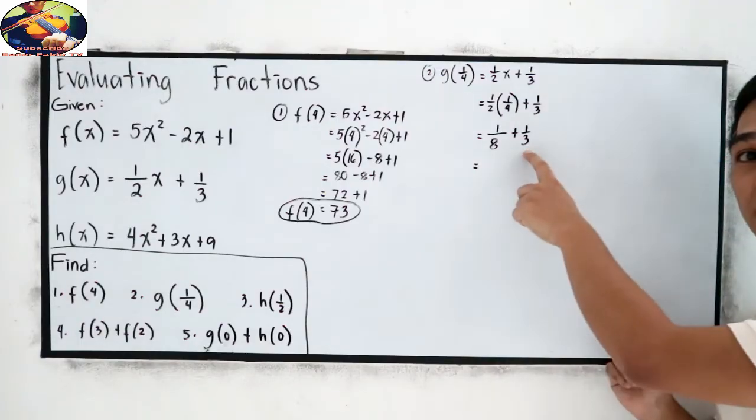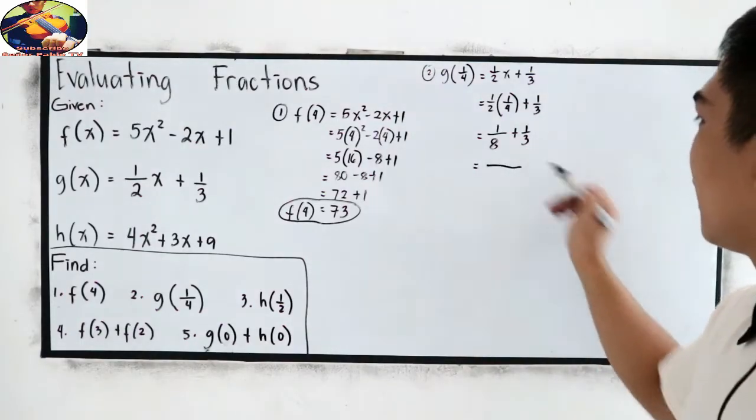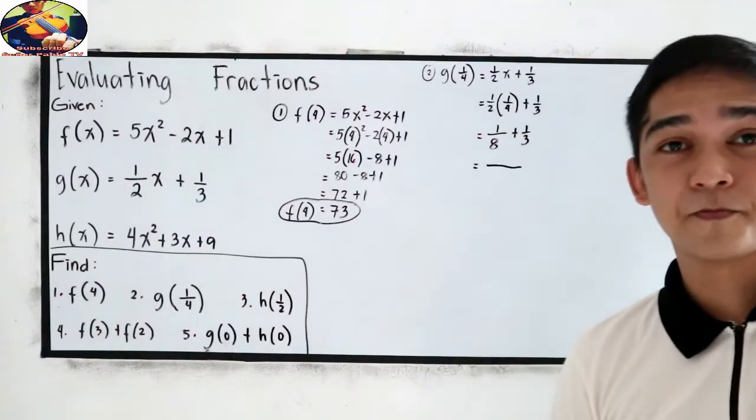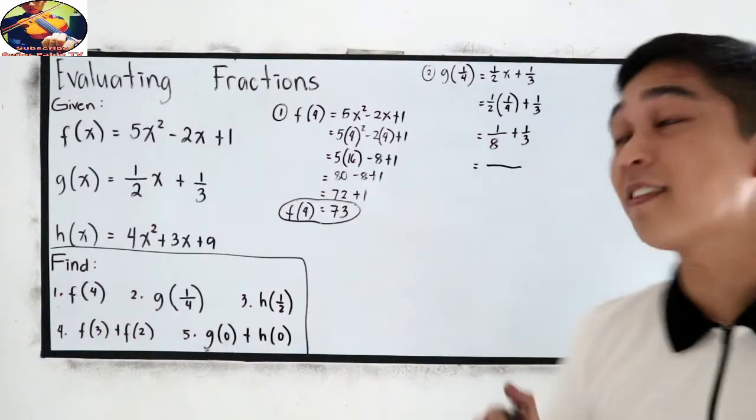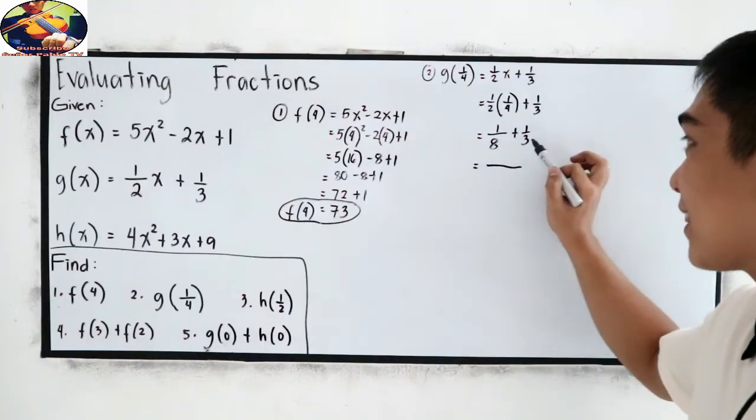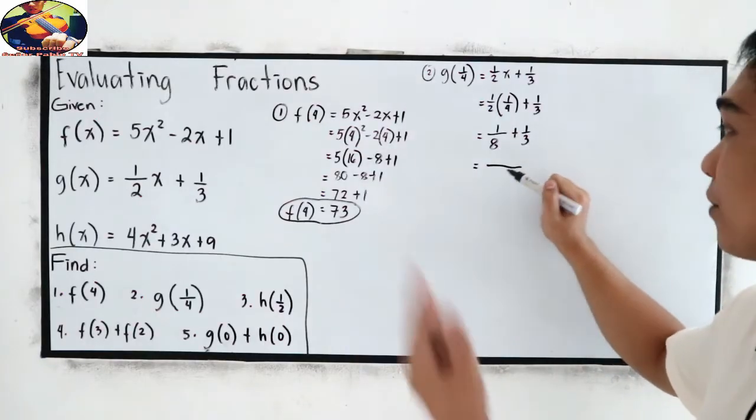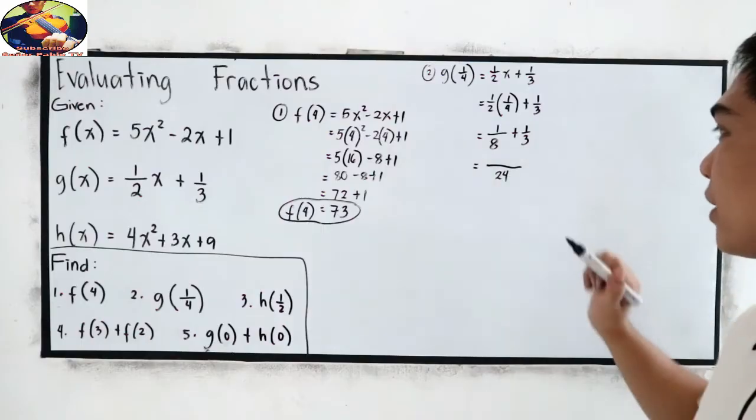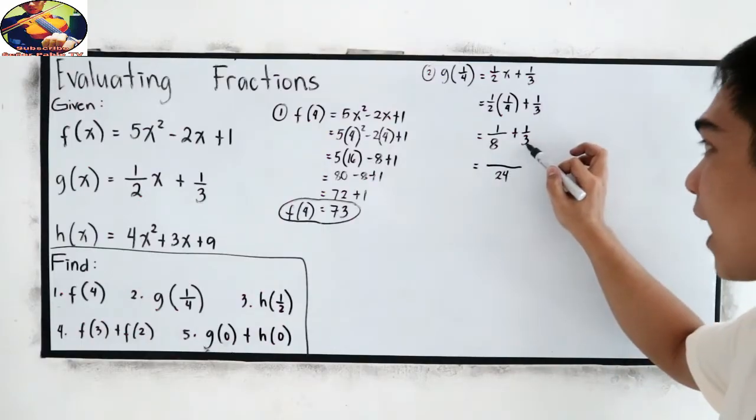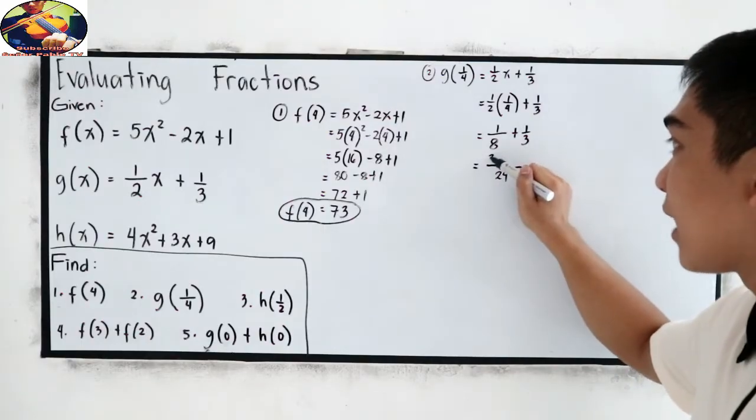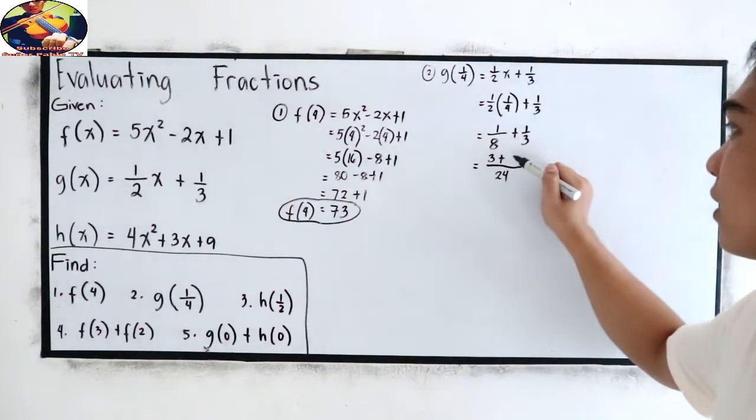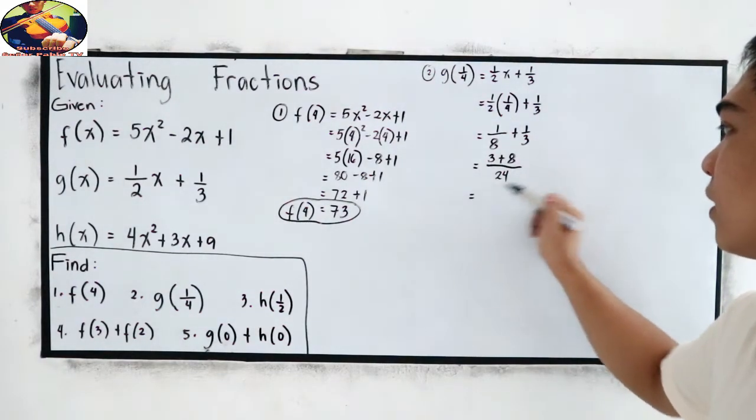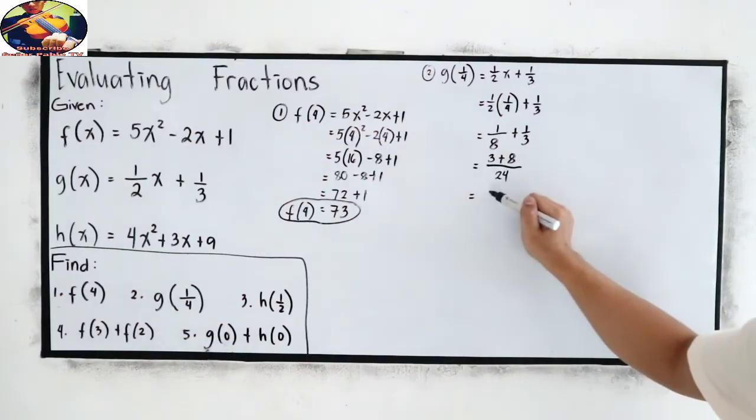So, 8 and 3. Let us find the LCD. So, if you want to do the shortcut, just multiply 8 times 3, that's 24. Then, cross multiply 3 times 1, that is 3, plus 8 times 1, that is 8. 3 plus 8, which is 11, over 24.